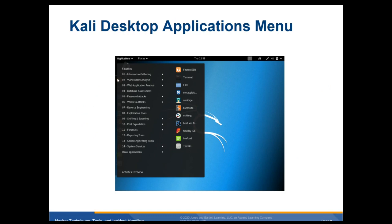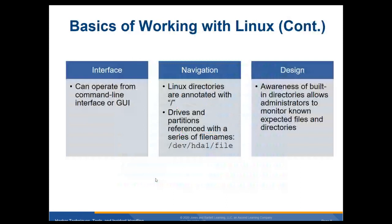The Kali desktop breaks down into different areas — for example, information gathering — and when you click on each one you get a submenu covering wireless attacks, reverse engineering, exploitation, and sniffing. For basics of working with Linux, it can operate from the command line or GUI, and Linux directories are integrated with a slash.